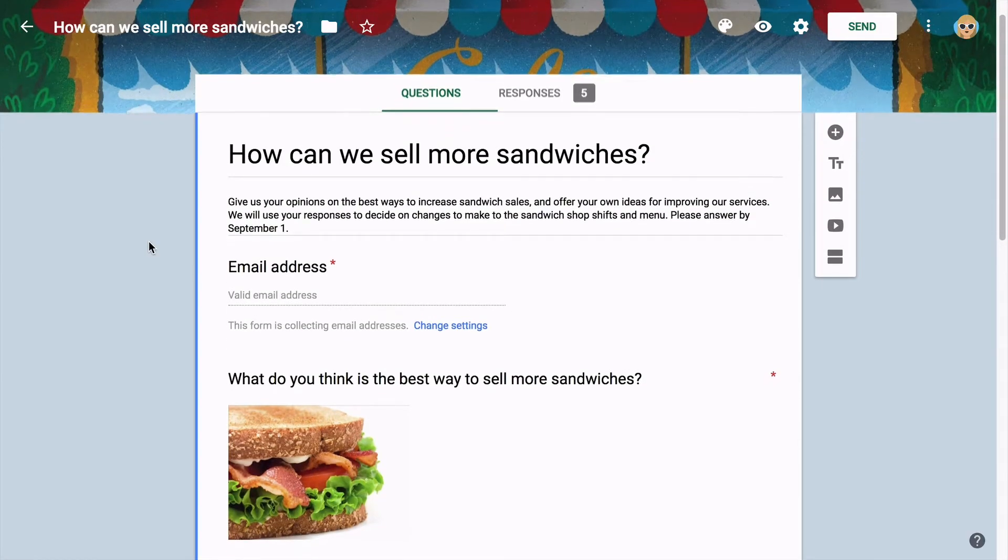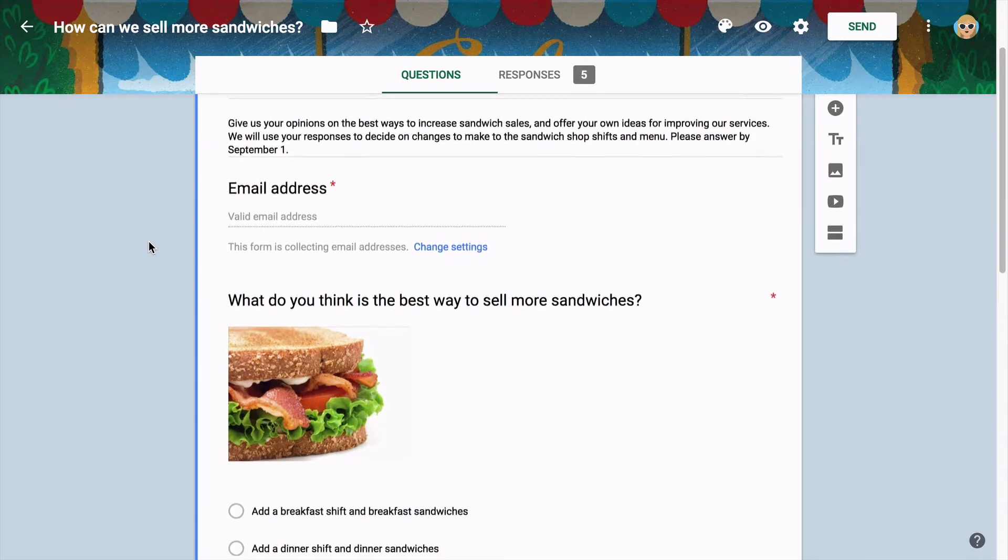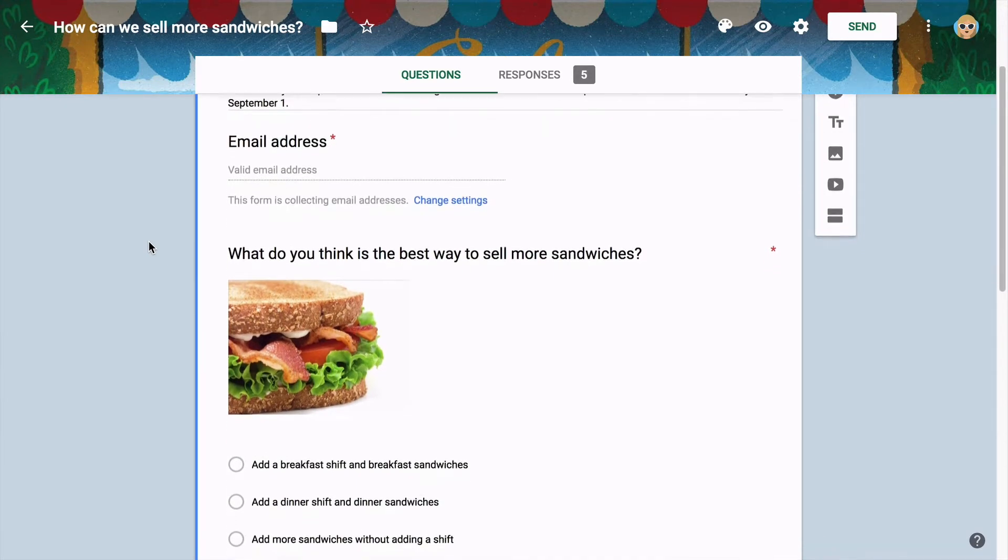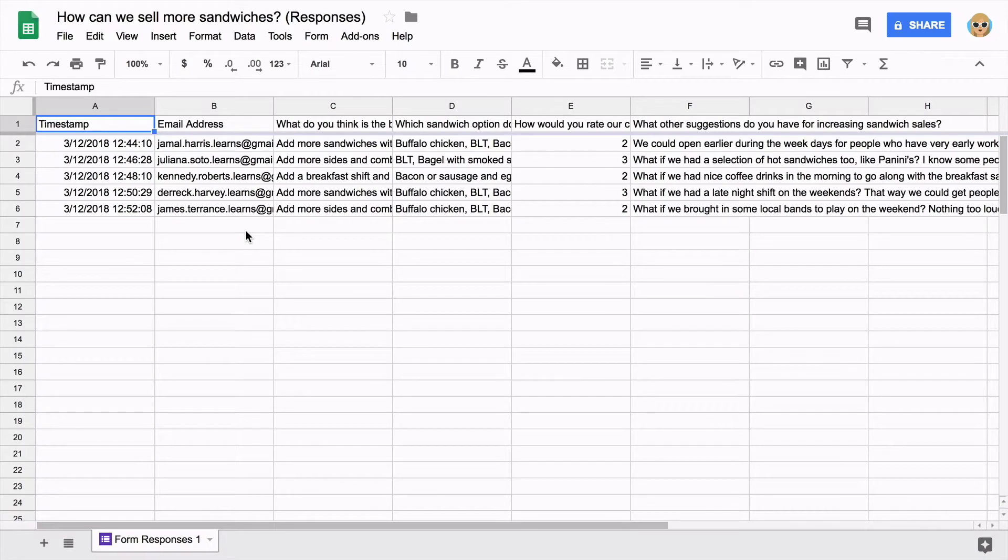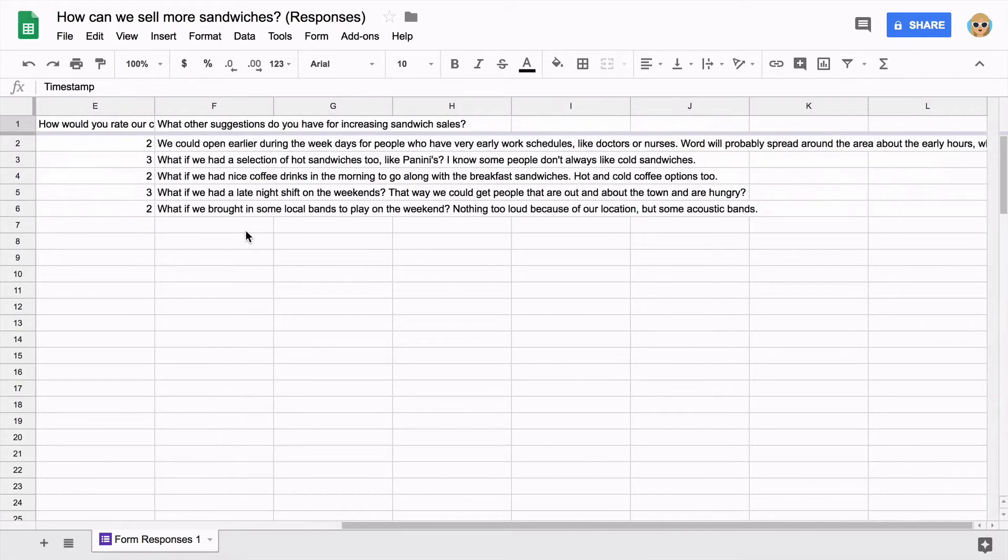You can customize a digital form by changing how it looks and varying the questions and available answers so you get the exact information you need. You can also share your form over the internet so recipients see it and respond to it from their computer or device. Finally, a digital form allows you to view and organize responses in different ways that fit what you're trying to accomplish.